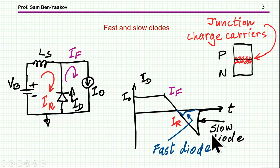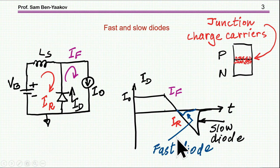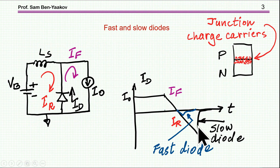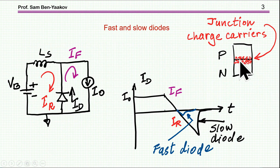So the slow diode will carry current in the reverse direction for a long time when the voltage is reversed, because for the reverse current to build up there is a need for charge carriers to be present in the junction.